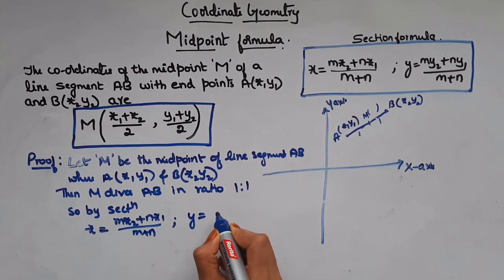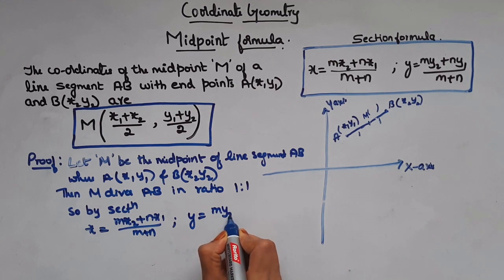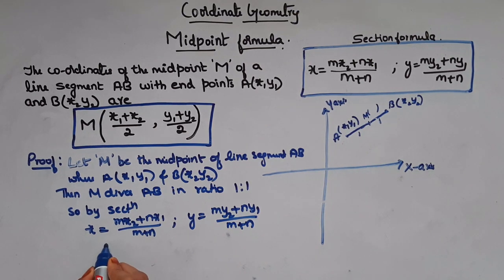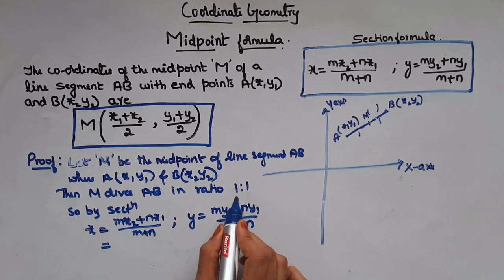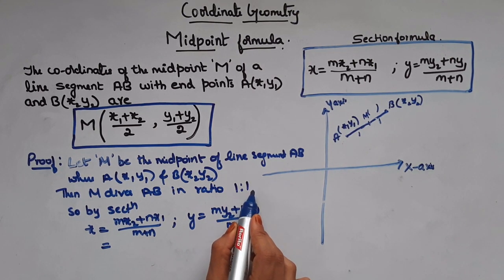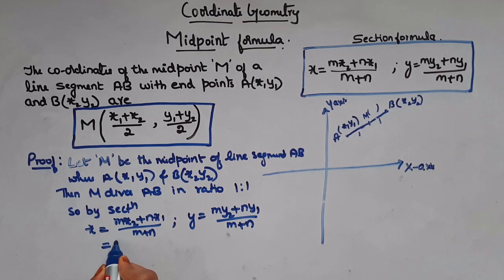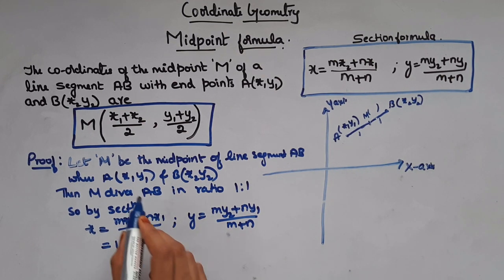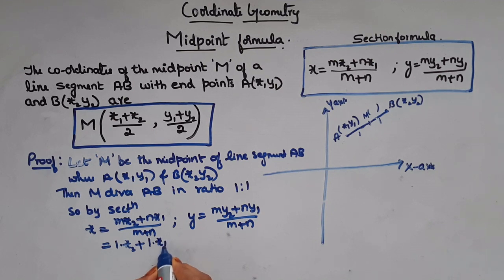So now let's put this formula here. Here m and n are 1 and 1. So let's put m is 1, 1 into x₂ is x₂ plus n is 1 into x₁ is x₁. By m plus n, 1 plus 1 is 2.